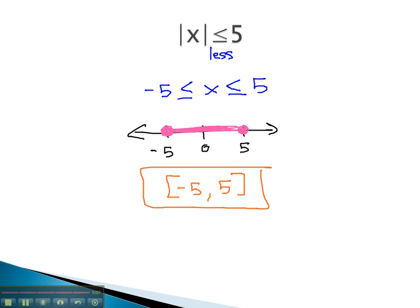When the absolute value is greater, set up an OR. If the absolute value is less, set up a tripartite inequality.